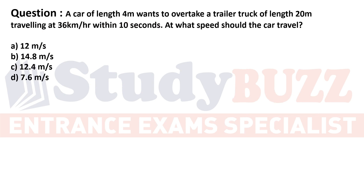A car of length 4 meters wants to overtake a trailer truck of length 20 meters traveling at 36 km/h within 10 seconds.